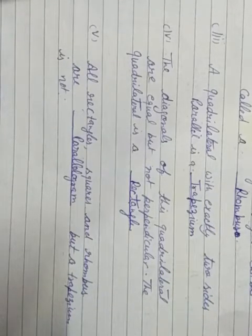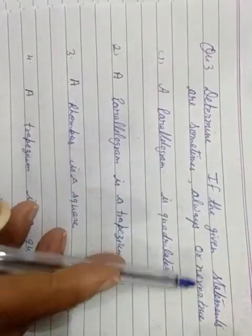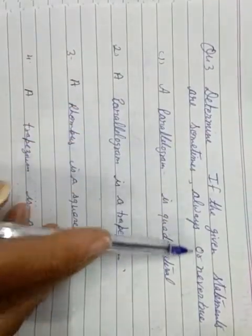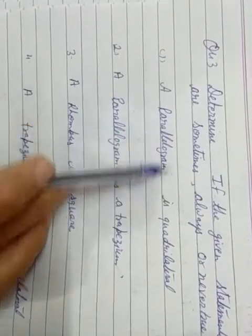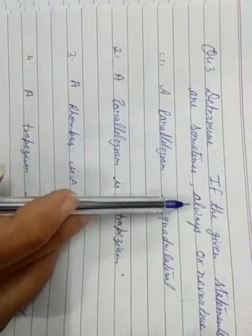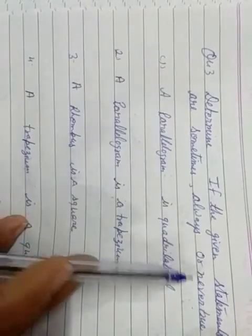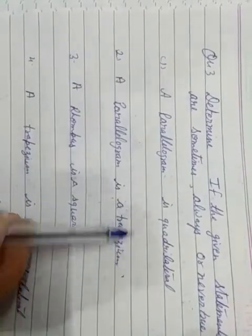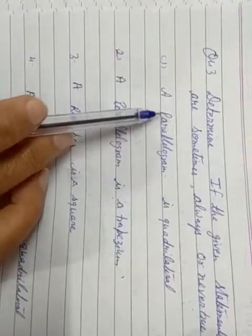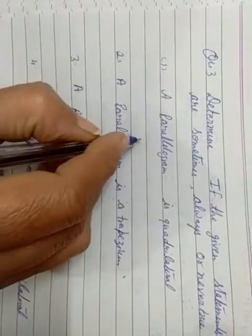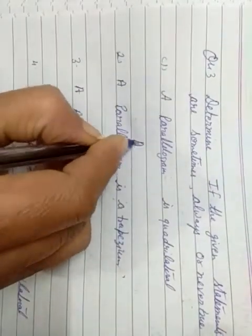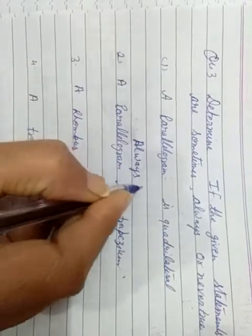Now question number 3. Determine if the given statements are sometimes, always or never true. We need to identify which statements are sometimes true, always true, or never true. Parallelogram is a quadrilateral — it is always true.